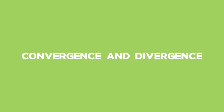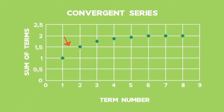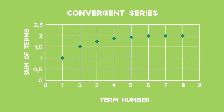Convergence and Divergence. If the sum of a series gets closer and closer to a certain value as we increase the number of terms in the sum, we say that the series converges. In other words, there is a limit to the sum of a converging series. If a series does not converge, we say that it diverges.